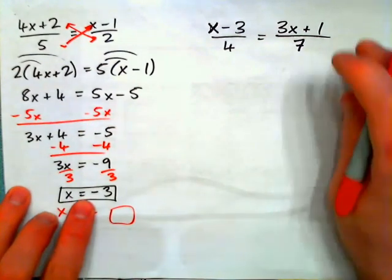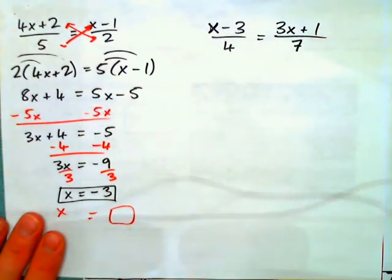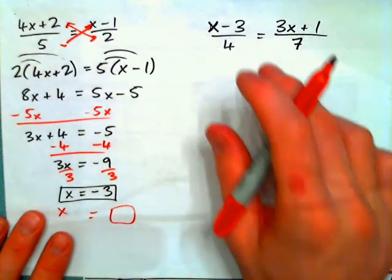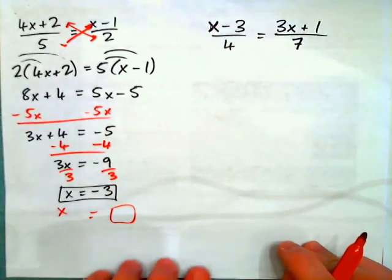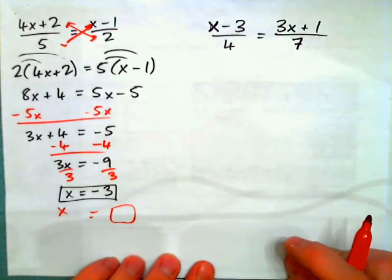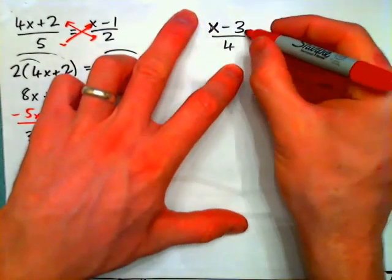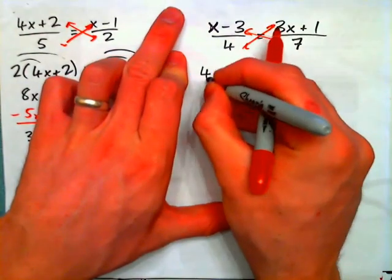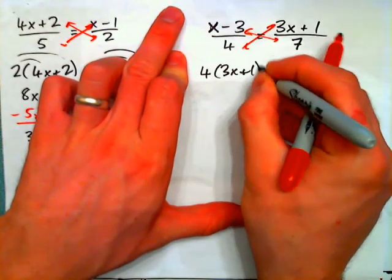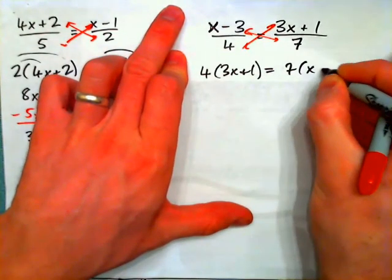Please press pause now and do this example. Press pause and do this example here. And you should get x's negative 5 on this one. So if I cross multiply, I'll get 4 times 3x plus 1 equals 7 times x minus 3.